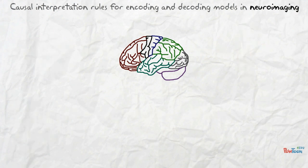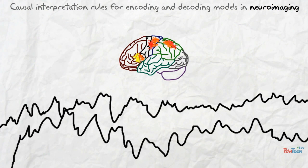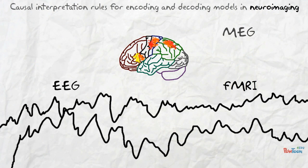Neuroimaging technologies allow researchers to measure aspects of activity in the human brain. Commonly used functional neuroimaging techniques to record brain activity during different experiments are functional magnetic resonance imaging, electroencephalography, magnetoencephalography, or near-infrared spectroscopy.